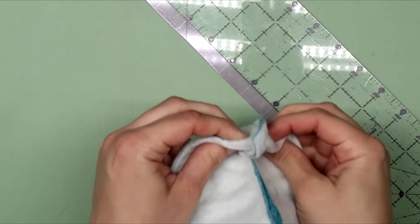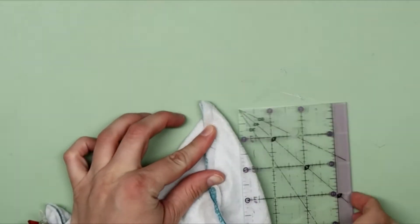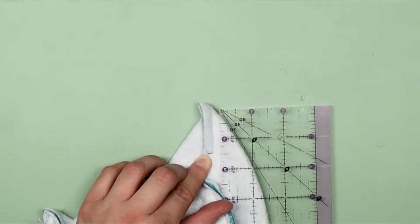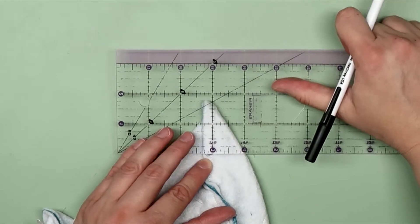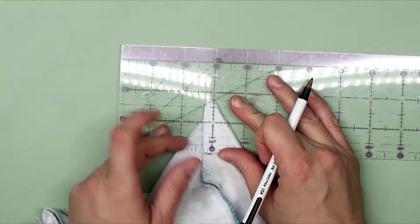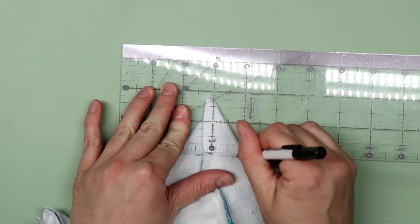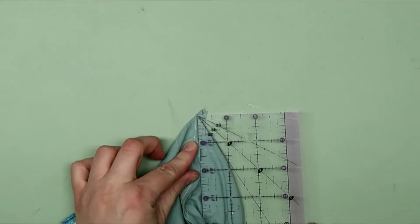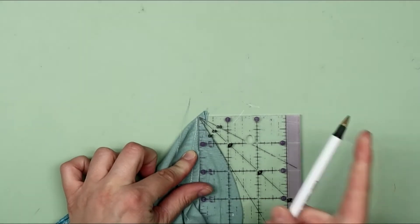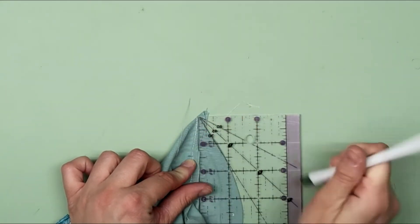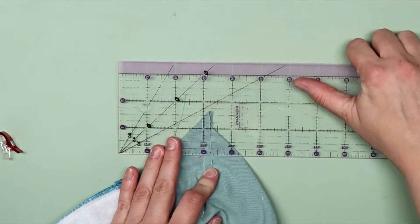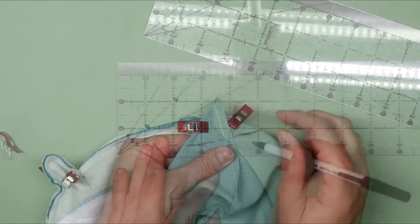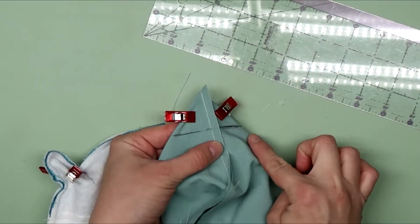Now we are going to box the corners, take the side and the bottom seam and place them together and then use a ruler to make a mark about an inch and a half down from the corner. Pick a straight line on your ruler and put it right on top of your seam. Then draw a line across the fabric and do that for all four corners. Sew straight across those lines that you just drew.